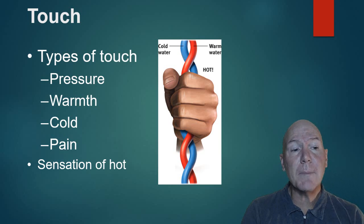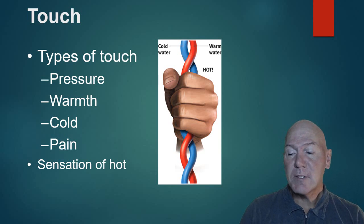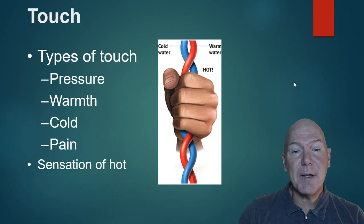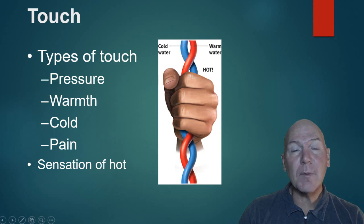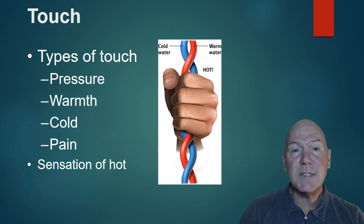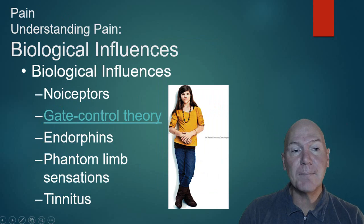In this diagram, a person is holding a tube — one filled with warm water and one with cold water — and the perceived sensation is 'hot.' Similarly, itch is a combination of pain and other receptors. All the other sensations we have are combinations of these receptors.